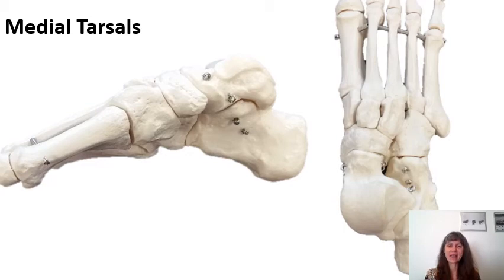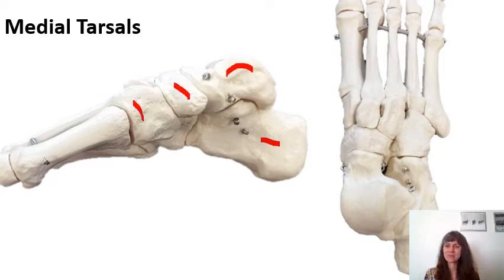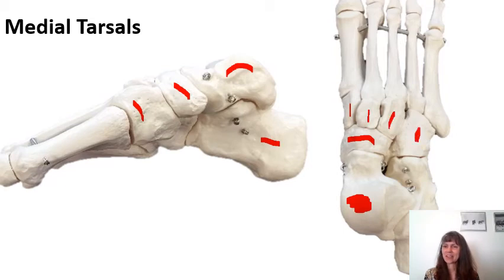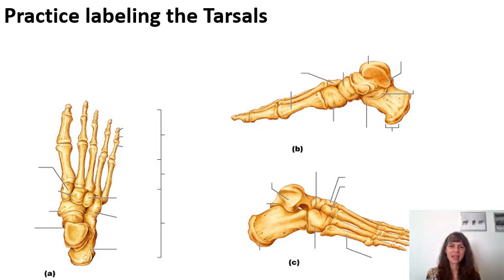Here we have a medial view of the tarsals. You can identify the talus, calcaneus, medial cuneiform, and navicular. You can see the smooth curved surface on the proximal aspect of the talus, then calcaneus, navicular navigating toward the medial, intermediate, and lateral cuneiforms and cuboid. This picture can help you practice labeling the tarsals and is located in the PowerPoint presentation on Blackboard.